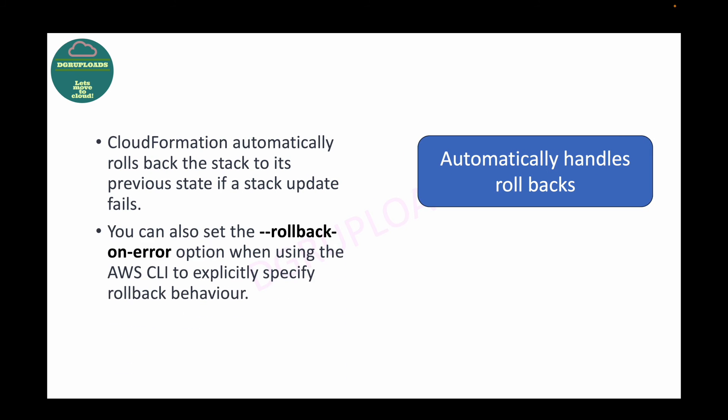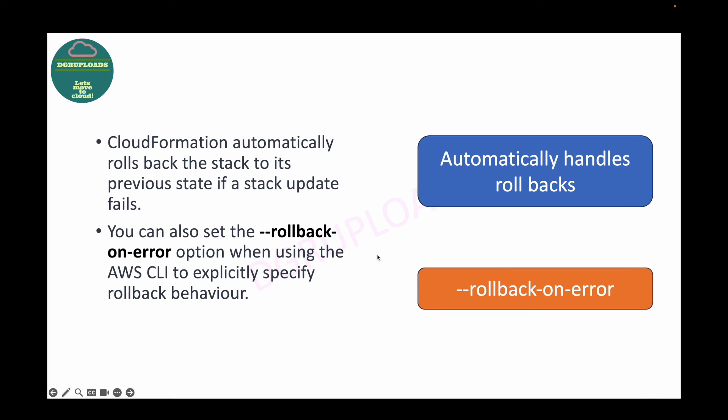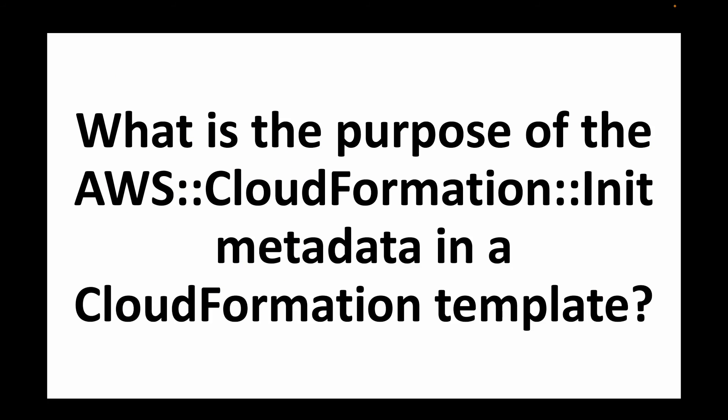If you are creating infrastructure from the CLI, you can use the --rollback-on-error option to explicitly specify rollback behavior. By default, if you're using the console the rollback feature is enabled. If using the CLI, passing this option enables rollback so that if there's any issue, CloudFormation will automatically roll back and delete all the resources it has created.